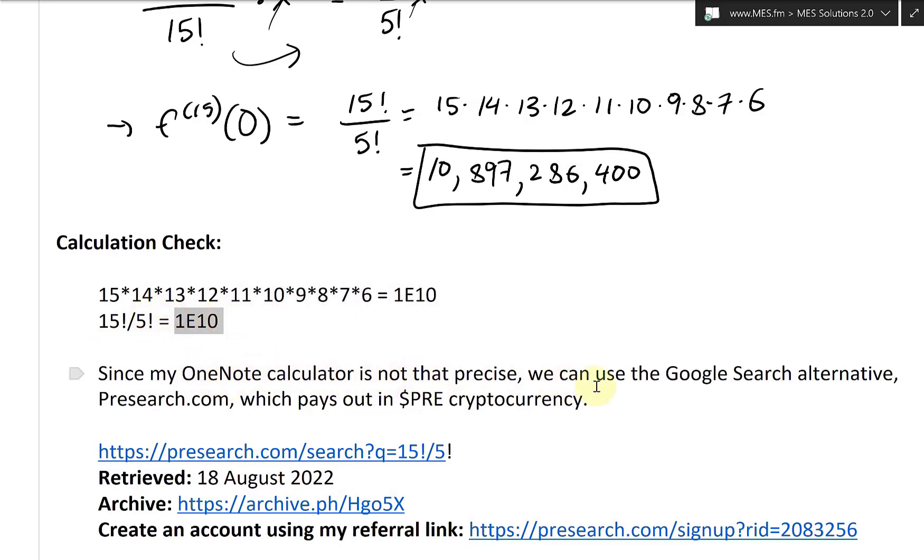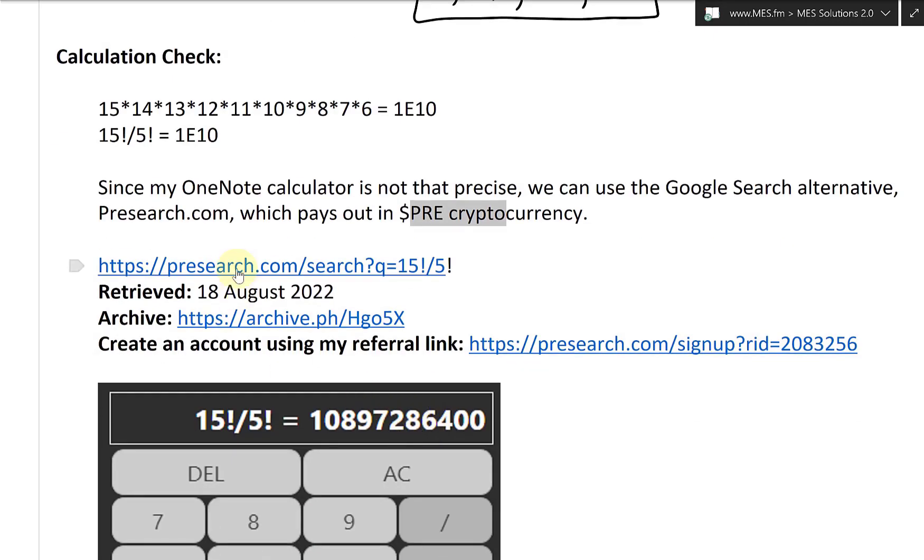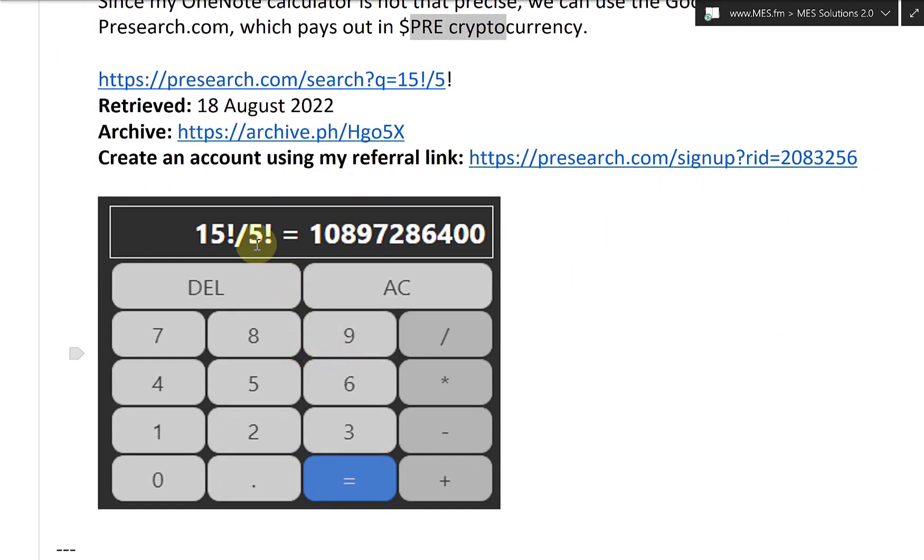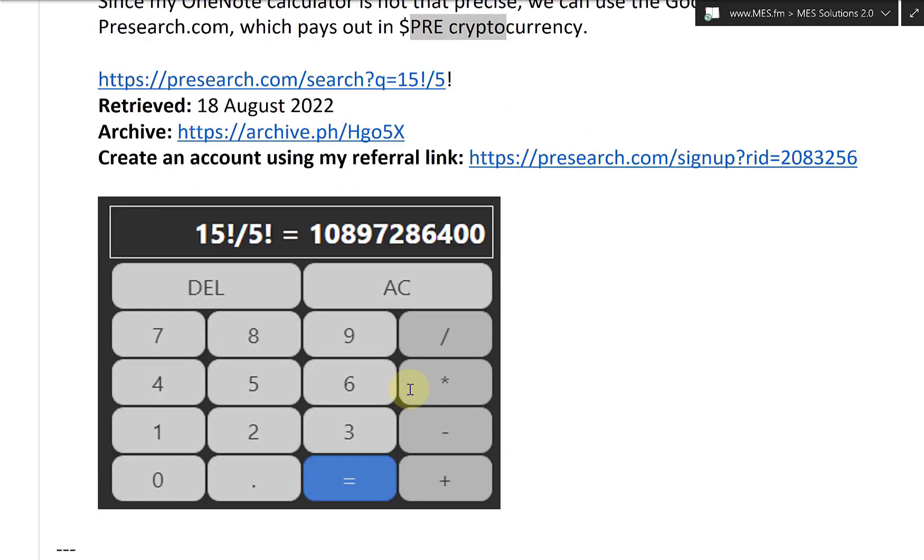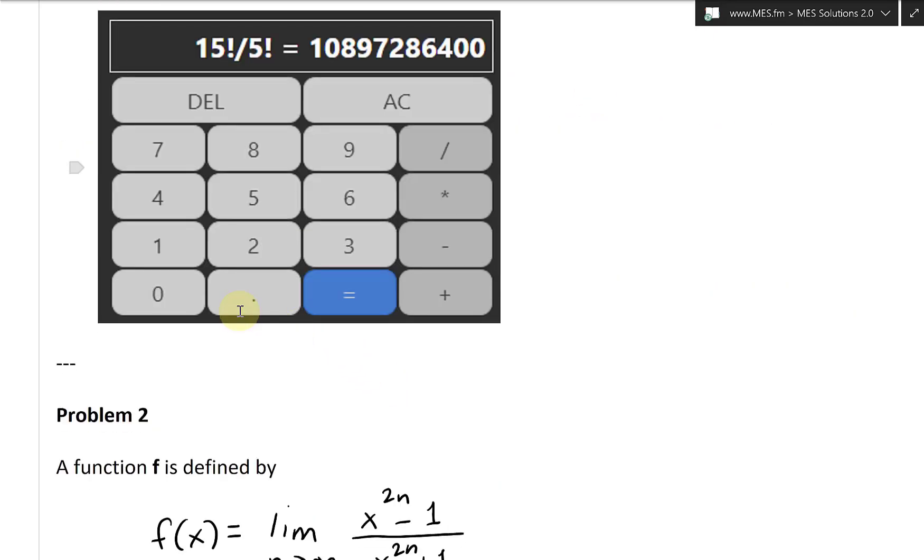So since my OneNote calculator is not that precise, we could use the Google search alternative, presearch.com, which pays out in PRE cryptocurrency. So if you type it over here, Presearch has a built in calculator, 15 factorial divided by 5 factorial, you get this 10,897,286,400. Yeah, so that is correct.